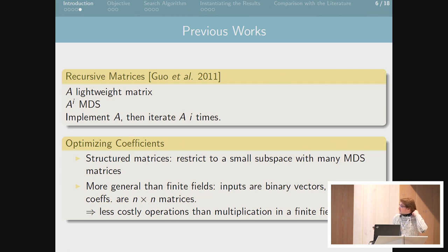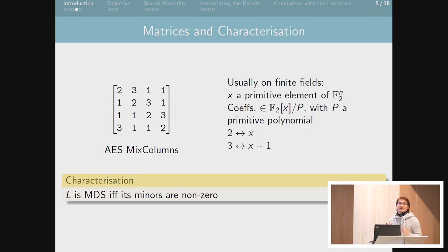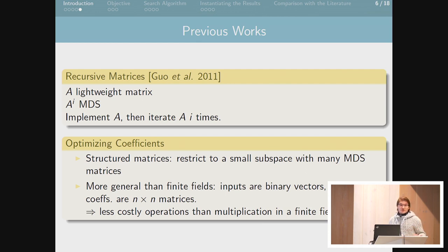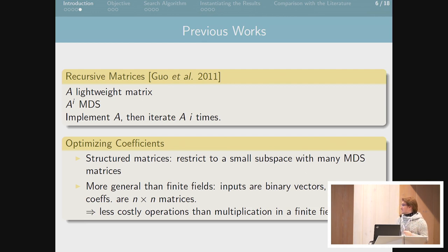What has also been done a lot is trying to optimize the coefficients of the matrix. If you look at this matrix, we do a matrix-vector multiplication with a fixed number of XORs and multiplications by each coefficient. If we have coefficients which are lightweight to multiply in the finite field, that's better — 1, 2, and 3 are very nice in this case. Since the search space is huge, people look at structured types of matrices in subspaces where there are many MDS matrices. What is also doable is to go out of the finite field to a larger search space, taking inputs as binary vectors and coefficients as n×n matrices, which may be less costly than finite field multiplications.